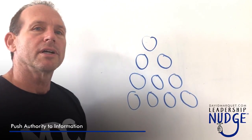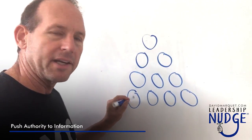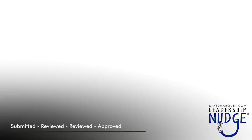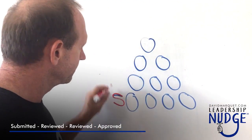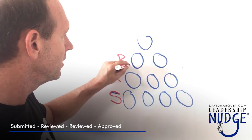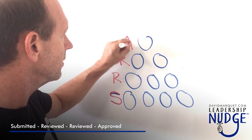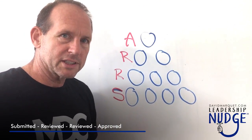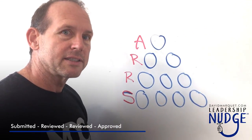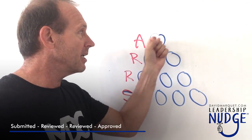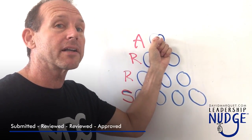Let's say you have a current routing process where the form gets submitted down here, then it's going to be reviewed, and approval sits up here. Now what we're going to suggest that you do — and here's your nudge — is to simply move the approval process down one level, but keep the form routing to the top.